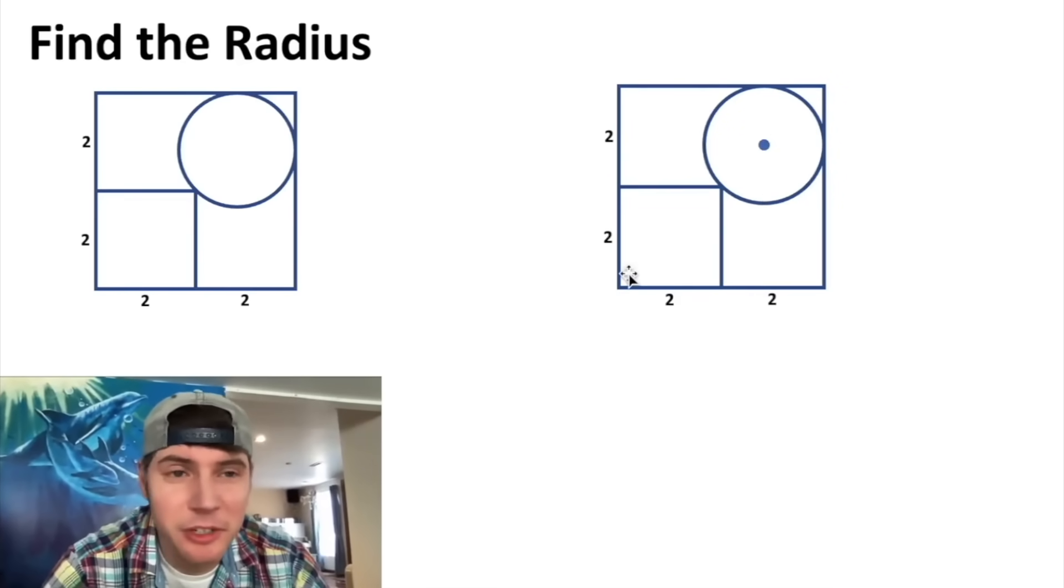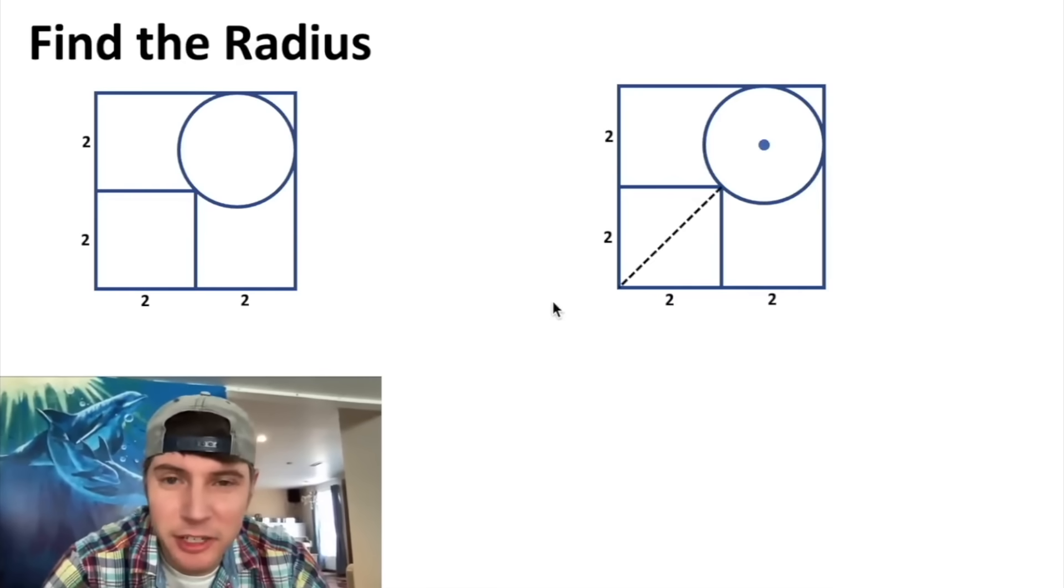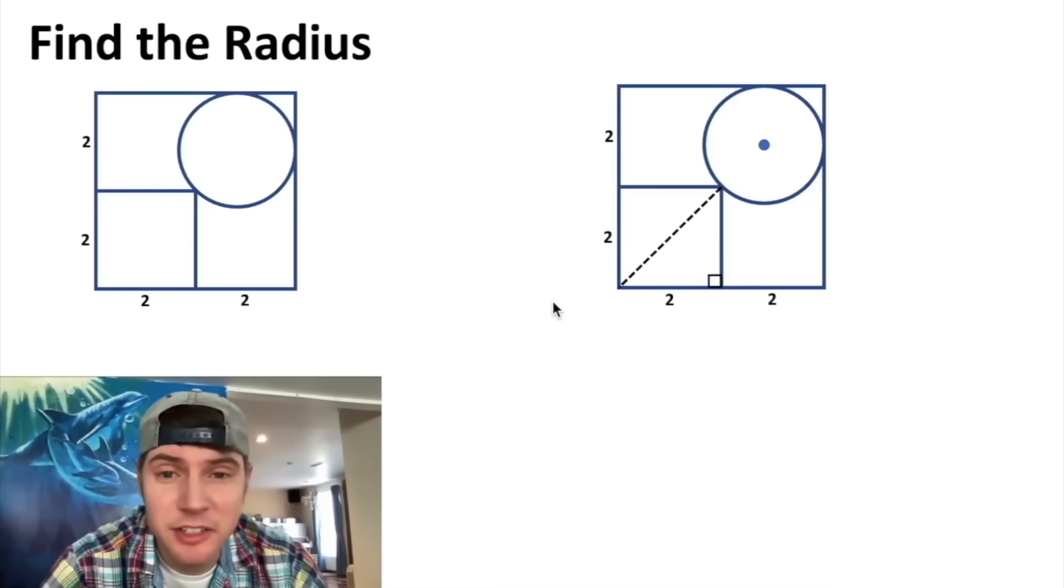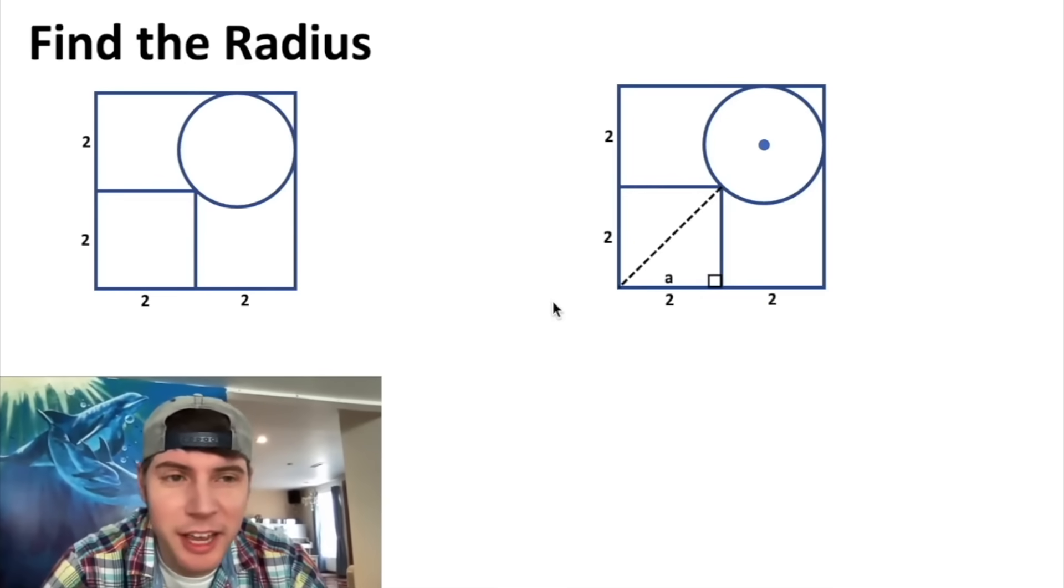So we can't really do that. Next let's look at this diagonal here. We can actually find out what this diagonal is because this is a right angle. So if we call this side a, this side b, and this side c, we know that a² + b² = c². a right here is equal to 2 and b is the same as this, so it's equal to 2.